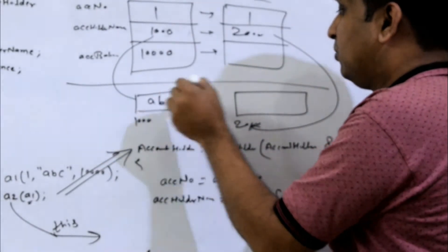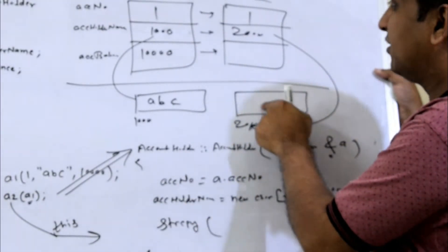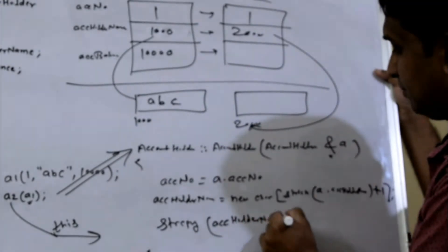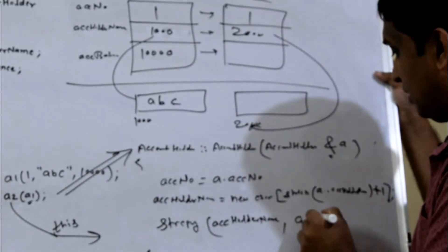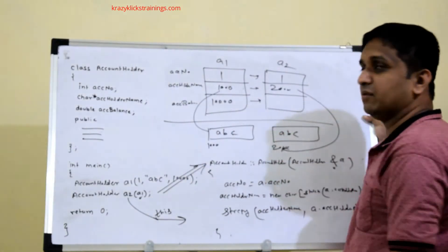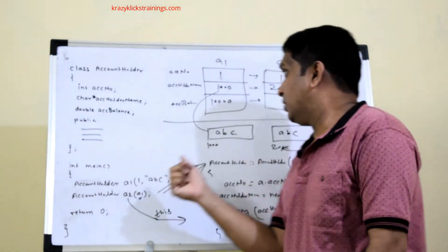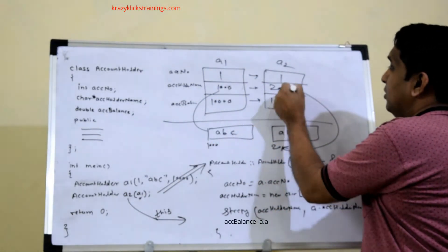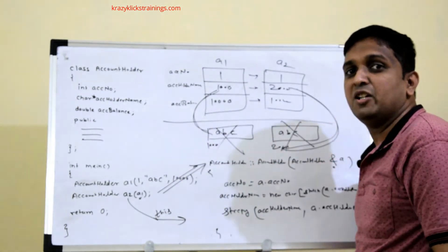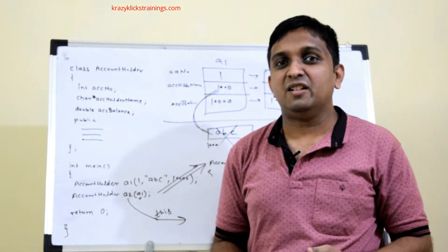After allocating memory, we copy the contents using strcpy. The destination is a2's acc_holder_name and the source is a1's name: strcpy(acc_holder_name, a.acc_holder_name). This copies abc into the new block — this is deep copy. When the two objects go out of scope, the destructor for a2 frees its own memory block, then the destructor for a1 frees a1's memory block. Both times a separate block is deleted, so there is no dangling pointer situation.